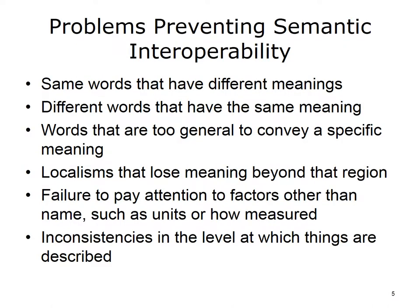There are many problems that prevent us from achieving semantic interoperability: same words that have different meanings, different words that have the same meaning, words that are too general to convey a specific meaning, localisms that lose meaning beyond that region, failure to pay attention to factors other than name such as units or how measured, and inconsistencies in the level at which things are described.